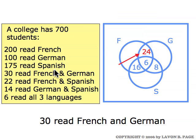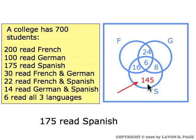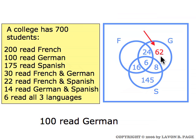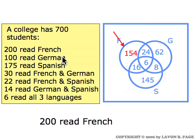One hundred seventy-five read Spanish, so that's going to be the total inside the S circle. We determine what to put there by subtraction, and we find we have to put one hundred forty-five in this spot. To make the total for German be one hundred, we need to put a sixty-two in this spot. And finally, to make the total for French be two hundred, we need one hundred and fifty-four right here.